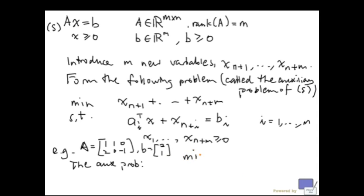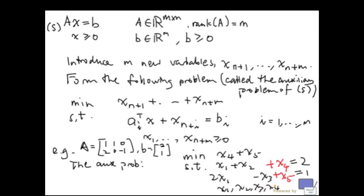S is the system of here. Ax is equal to b, x greater than or equal to 0. So, our auxiliary problem is going to be minimize x4 plus x5, because I have x1, x2, and x3. And the constraints will be x1 plus x2, plus x4, equal to 2, and 2, x1, minus x3, plus x5, equal to 1. And x1, x2, x3, x4, x5, greater than or equal to 0.